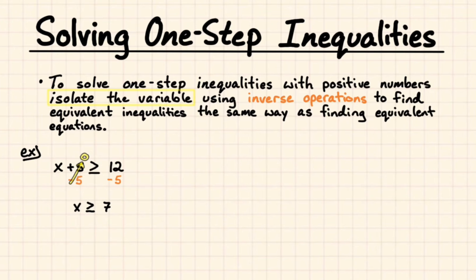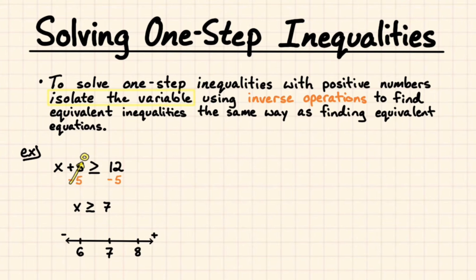Let's graph x is greater than or equal to 7. We're going to put that on the number line. The value in the center is going to be our boundary value, which is 7, meaning that's going to be what we're comparing x to — it'll be the stopping point of our graph. So we'll put 7 in the center, 8 towards the positive, and 6 decreasing towards negative. We'll put a circle above 7, but because it can be equal to, we'll fill in that circle as a dot, meaning it's closed — it can be equal to 7. And because x is greater than or equal to 7, we'll draw an arrow towards the true values which go positive.